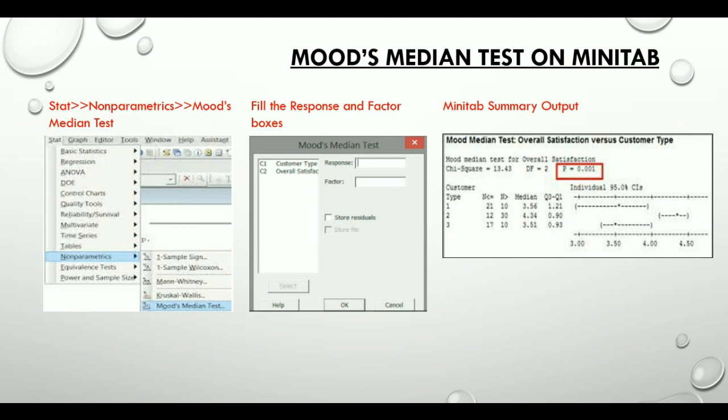We are concerned with the P value here. If P value is less than or equal to alpha, the medians are different. And we can reject the null hypothesis that they are the same.